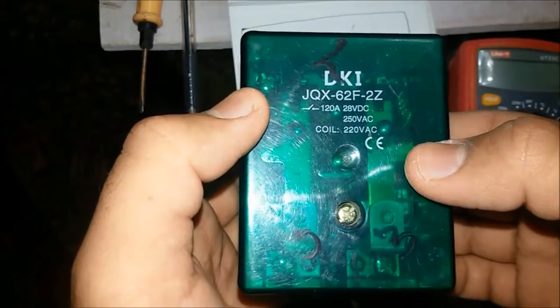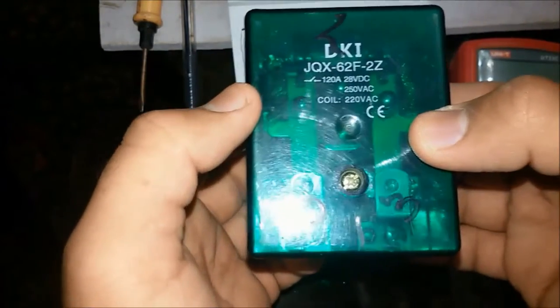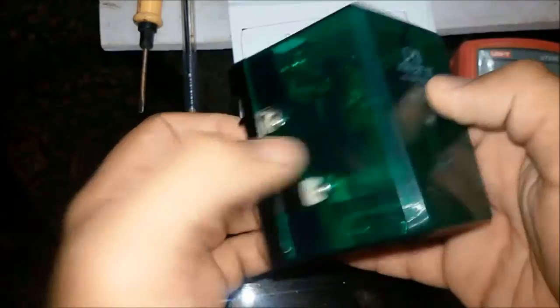The relay used for automatic turning on and off switch is DPDT, double pole double throw, AC high voltage and high current relay.